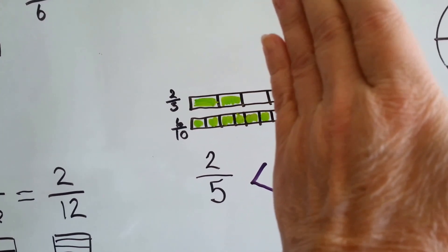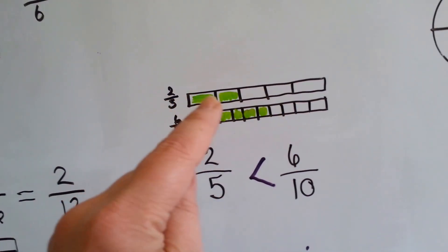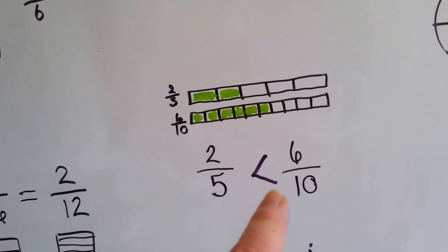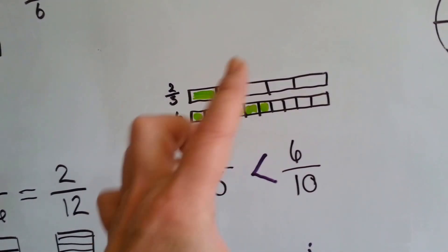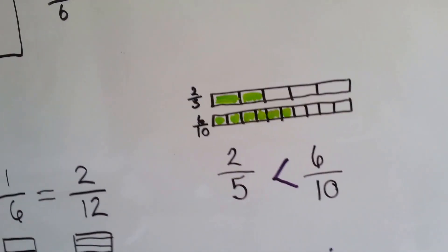But then when we get to six tenths, this one is not colored in. So two fifths is smaller than, is less than, six tenths. See? Big mouth eats big number. So two fifths is less than six tenths.